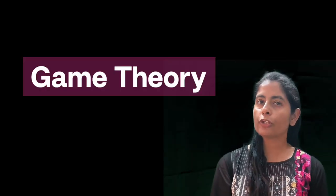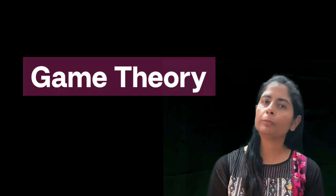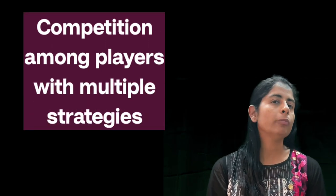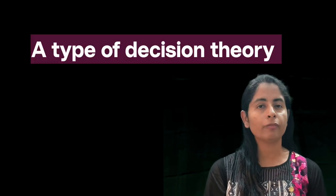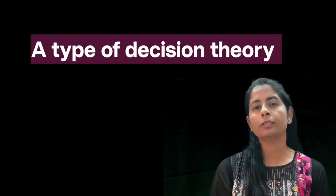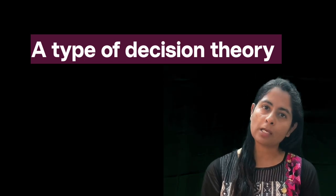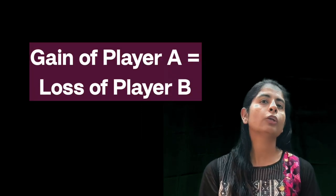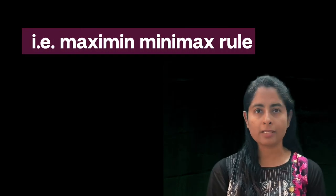In the coming few videos we will discuss game theory. It is a world of competition — whenever two people compete for a particular outcome, we can make use of game theory. It is another component of decision making. Here, different principles are applied and the gain of one competitor is the loss of another, so the maximin and minimax principle applies in game theory.